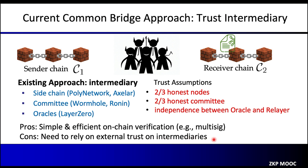The disadvantage of this approach is that it needs to rely on external trust on intermediaries. For example, using a sidechain requires trusting that at least two-thirds of the validators are honest. Using a bridge committee requires the same two-thirds honesty assumption. And with external oracles such as in Layer 0, it requires that the oracle and the relayer are independent.